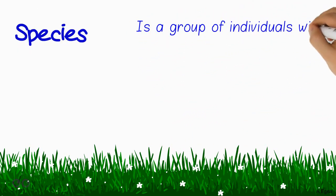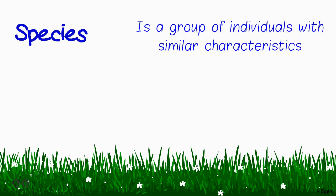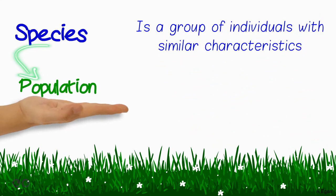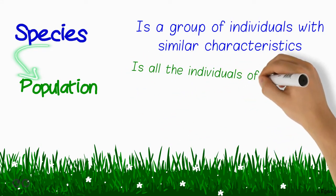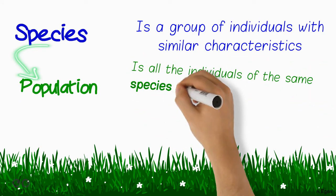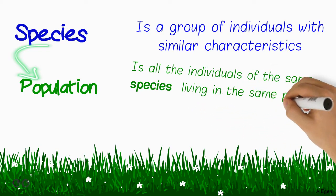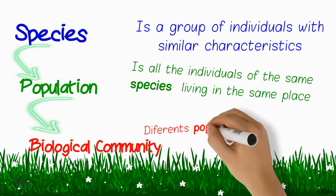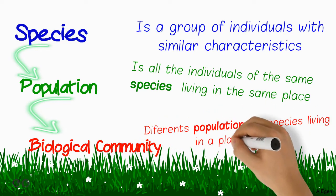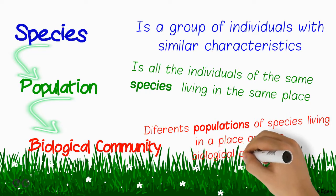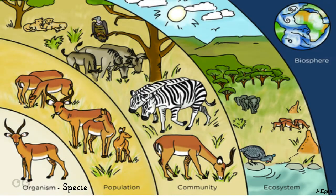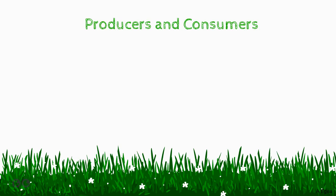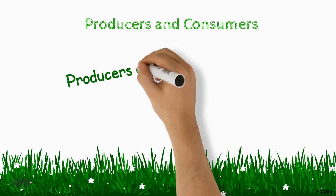A species is a group of individuals with similar characteristics. A population is all the individuals of the same species living in the same place. The biological community is made up of different populations of species living in a place.